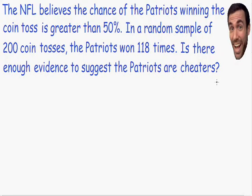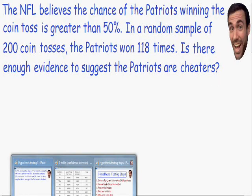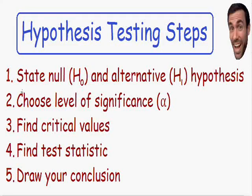First let's take a look at all of our steps in performing a hypothesis test. Step number one says to state the null and the alternative hypothesis. The null hypothesis is written with H sub zero or H naught, and the alternative hypothesis is written with H sub one or H sub a. It doesn't matter.